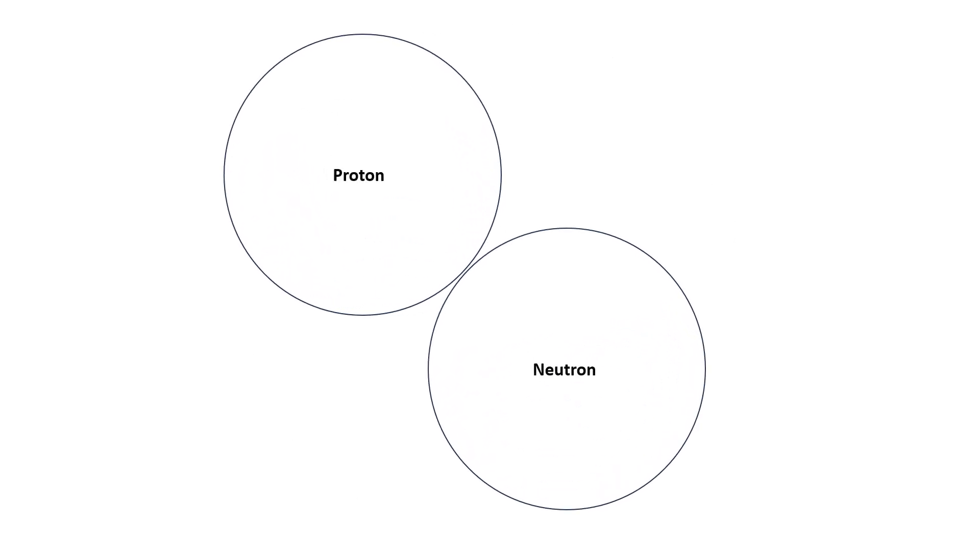Much of history, the atom was considered to be an elementary particle until subatomic particles were discovered. As we zoom into the center, we see the nucleus, which is composed of protons and neutrons.